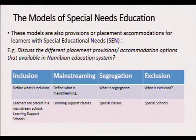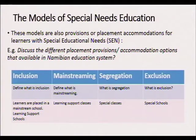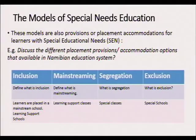We start with the models of special needs education. When one talks about the models, some writing says it talks about the provisions and the placements that are there for learners of special educational needs. We focus mostly on four of them: the first one is inclusion, the second one is mainstreaming, segregation, and exclusion.